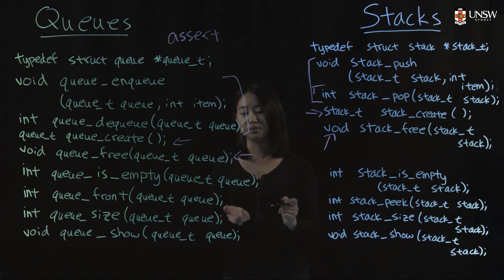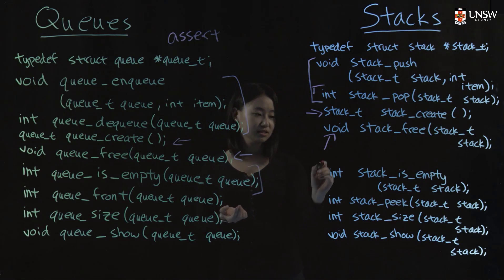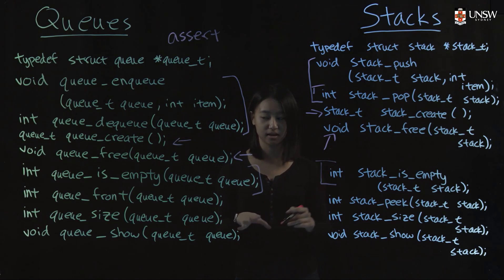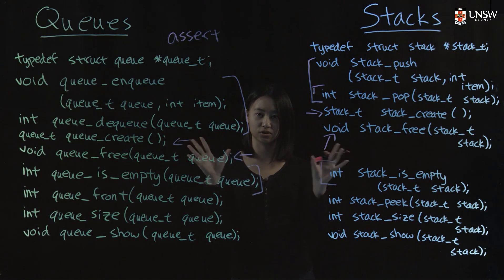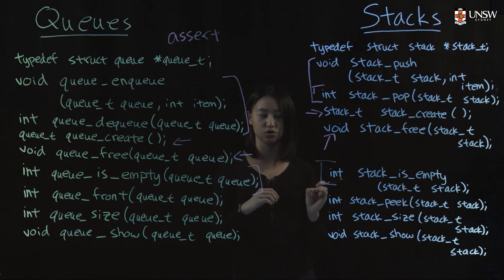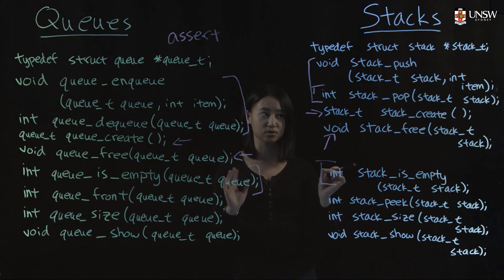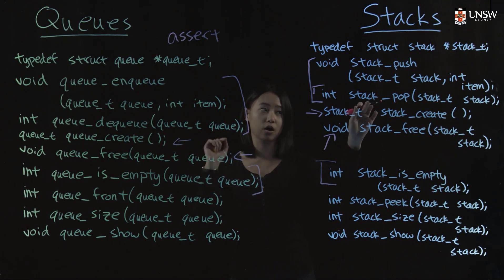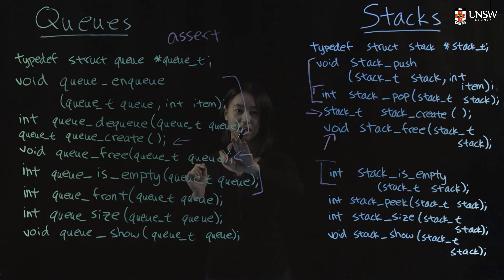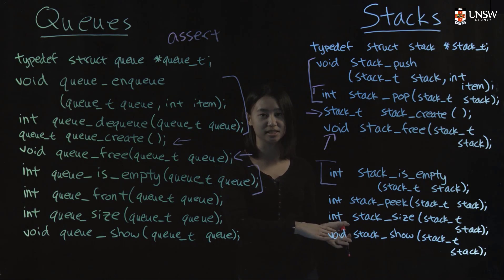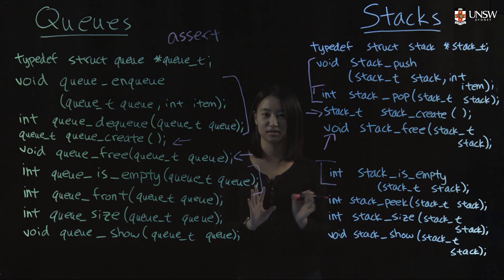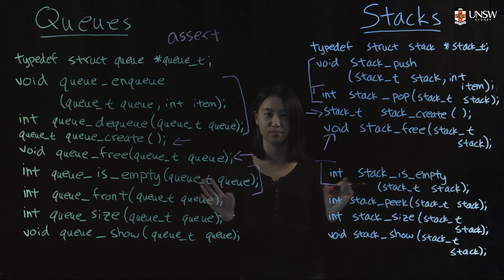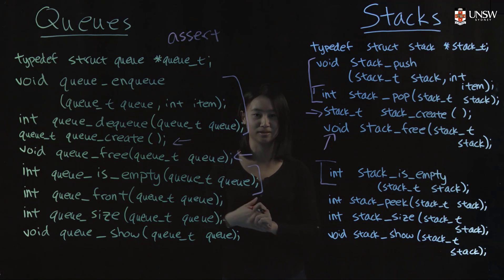A better idea would be to add functions that allow the user to check if the stack or the queue is empty. That way, when designing your program, you can always call this function to check if the stack or queue is empty before you call your pop or dequeue. If it is empty, you can print out a helpful error message instead of causing the program to crash, so the user will never get into a situation where the program crashes because they tried to dequeue from an empty queue.